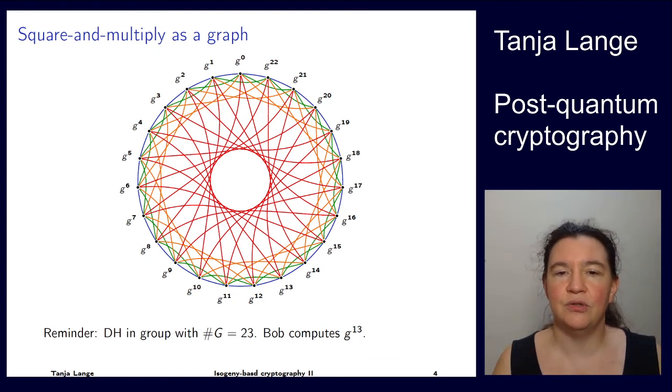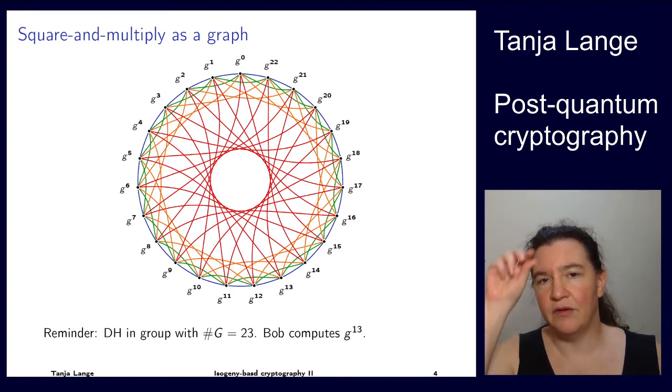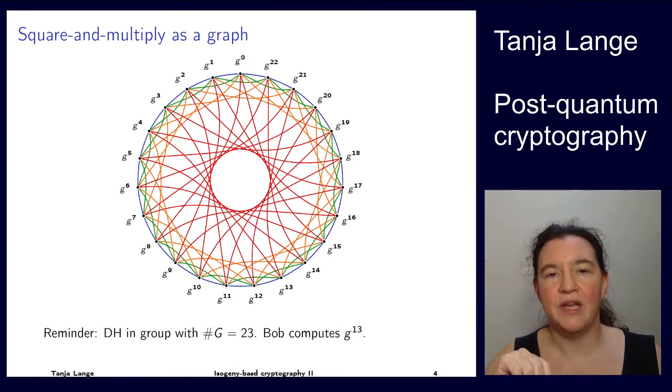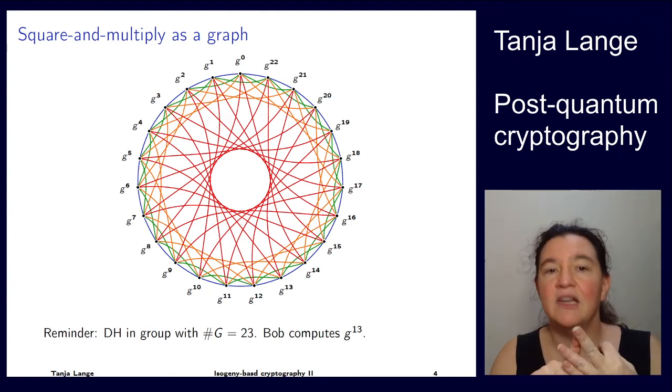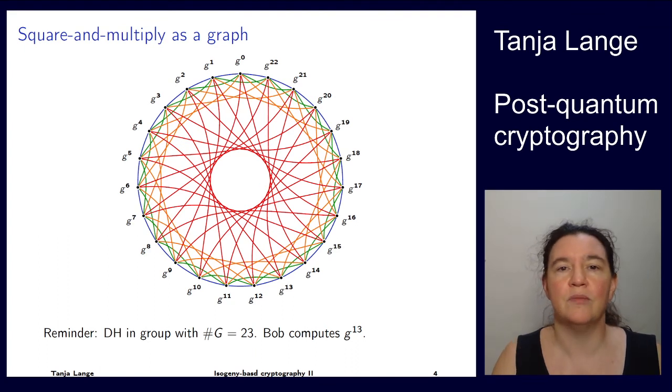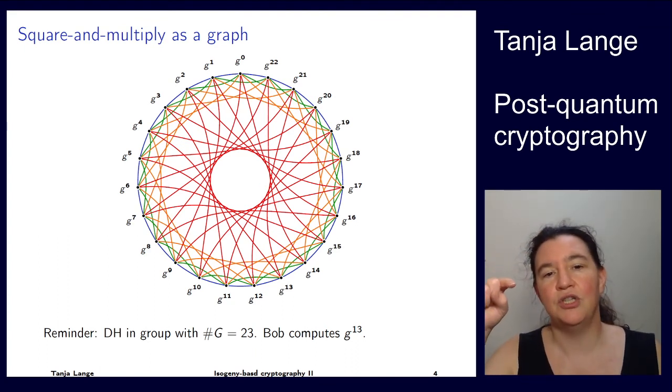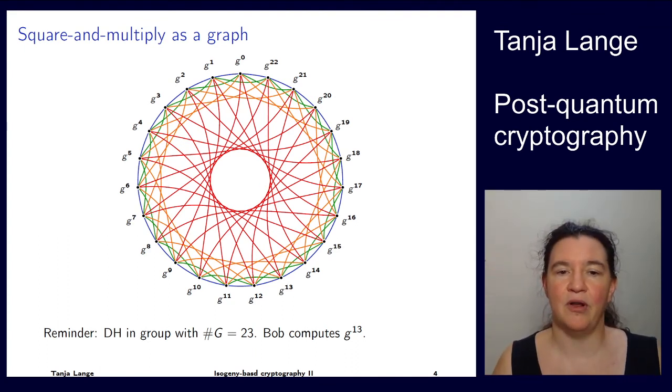So we're getting this kind of, it looks like a dreamcatcher thing. So this nice overlay of all the graphs. So we have the blue ones, which are single step. We have the green ones, which are two steps. The orange one steps with G to the 4, and then the red one with G to the 8. So here we have a graph where if you want to get to G to the 13, starting from G to the 0, we can do one of length 1, one of length 4, and one of length 8. We can even select in which order we want to do this. So we could also go from G to the 0, to G to the 8, to G to the 9, and then a step of length 4.